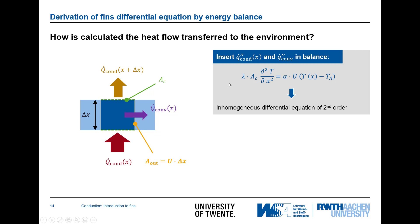Inserting both the definitions of convective and conductive flow into the balance, we arrive at the differential equation involving the two areas: the cross-sectional area and the circumference — not the circumferential area, since we divided by delta x. We also have the thermal conductivity lambda and the heat transfer coefficient. This differential equation is of second order, which means that for solving it in the next video, we will need two boundary conditions.